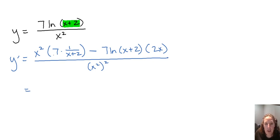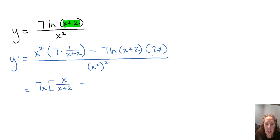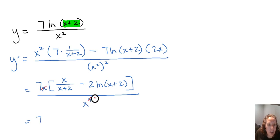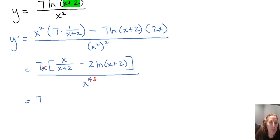Looking for a greatest common factor, all terms in the numerator have a 7 and an x, so we pull that out completely. That leaves us with 1x out of x squared, giving x over x plus 2, minus, after pulling out 7 and x, we're left with 2 times the natural log of x plus 2. In the denominator, a power raised to a power means we multiply exponents, giving x to the 4th. We can then reduce by canceling the x on top and bottom, and since we have a complex fraction, we multiply everything by x plus 2.